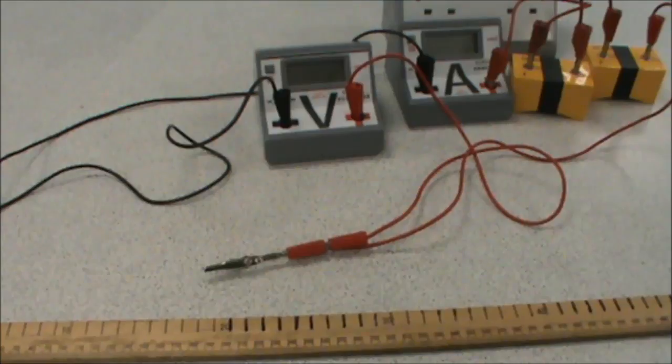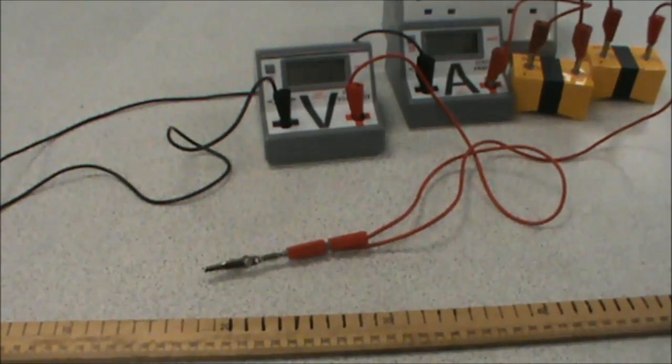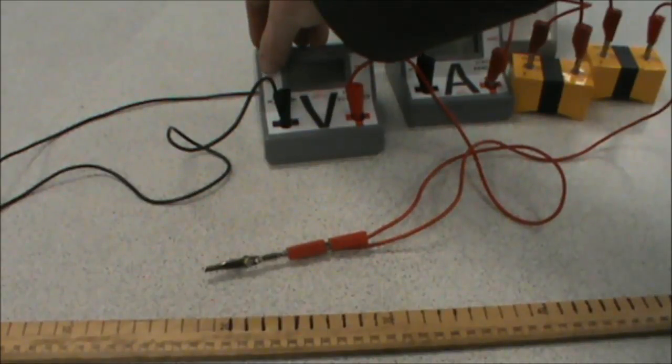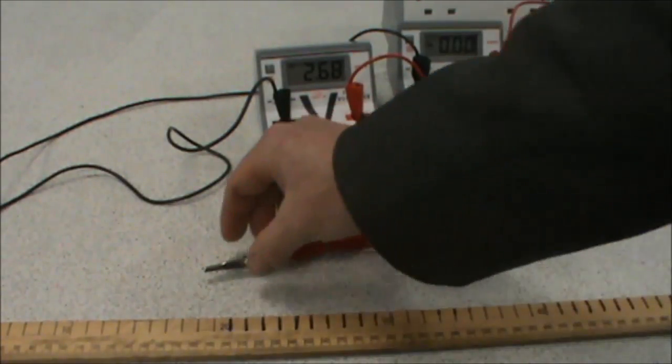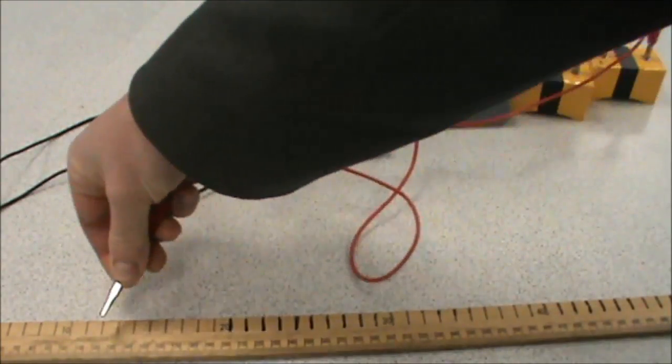Now, before we do any actual measurements for our circuits, we do a quick preliminary investigation to make sure that we have sufficient voltage from our cells, and that we can get some accurate readings at a suitable range of readings on our meter rule. So we turn the voltmeter on, and we turn the ammeter on, and we connect up the circuit at 10 centimeters.